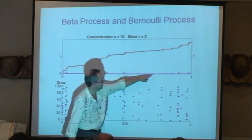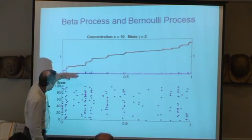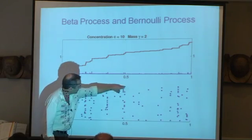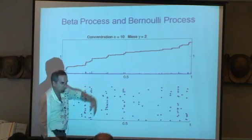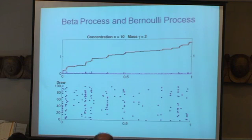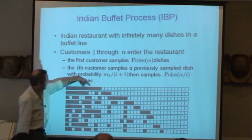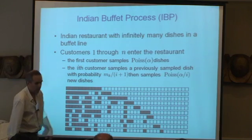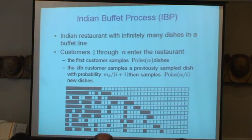A draw from a beta process is an infinite collection of coins. If I draw repeatedly from that, I get Bernoulli processes — they mostly have all zeros but a few ones, and you start to get ones co-occurring, which are features emerging as customers come into this restaurant. It turns out there is a restaurant analogy for this as well. If you integrate out the beta process, you get something called the Indian buffet process, where people come into the restaurant, they pick a few dishes, then the next person picks a few of the same dishes and then a few more dishes, and so on. That's gotten by integrating out the beta process.